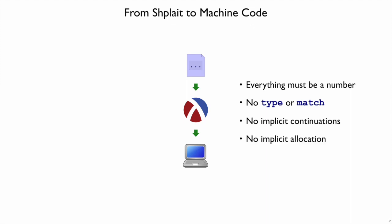And finally, there's no implicit allocation by making up records anytime you want to at the machine level. Instead, there are just numbers for memory addresses and numbers stored inside of those addresses.